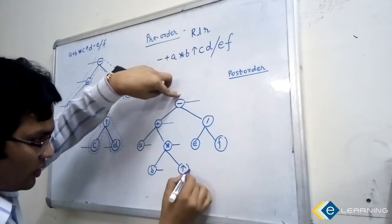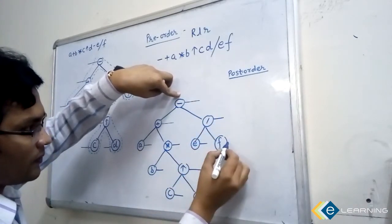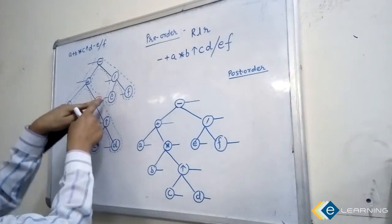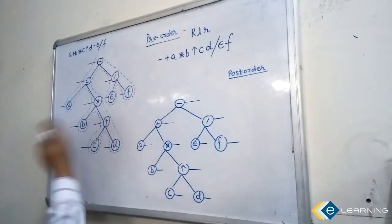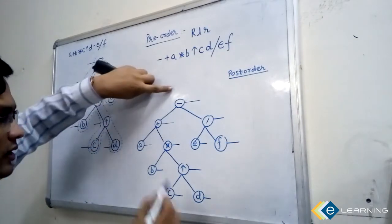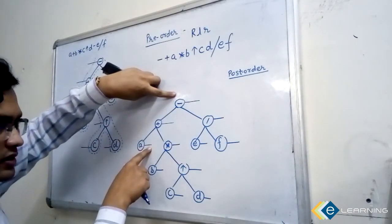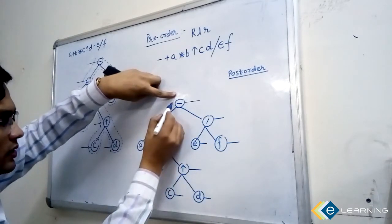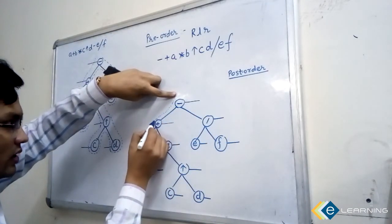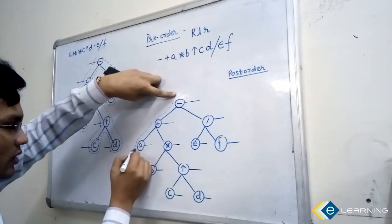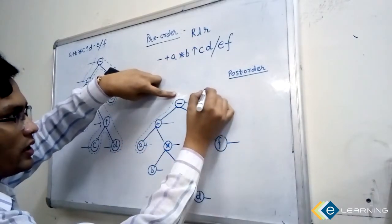This is the post-line. For post-order means mark the line post to the node. Now same again: traverse from root and whenever this line is intersecting write it down. This is not intersecting any line. Now this node is going to intersect - write down A.